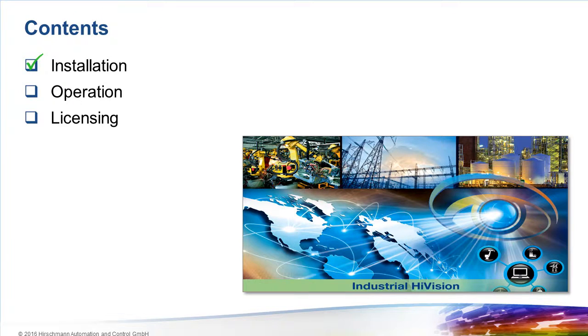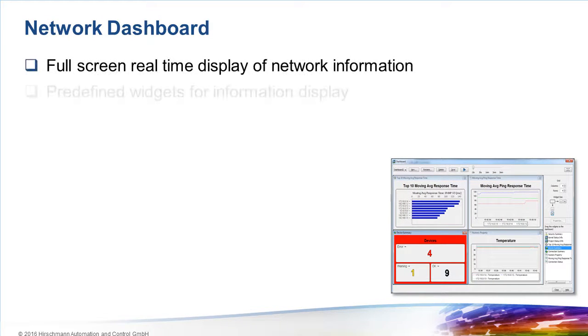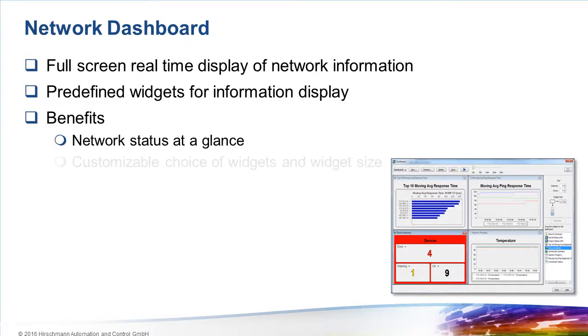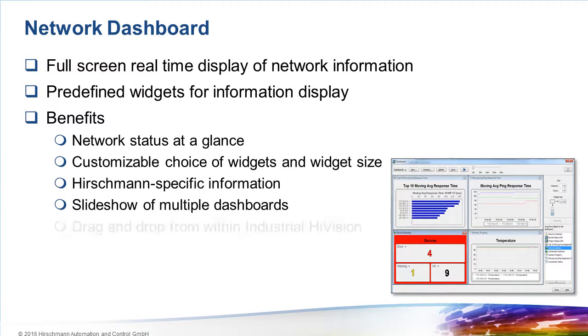That brings us to the end of the installation part. Now let's take a look at operation. There are only two major new functions, but both these functions greatly facilitate the day-to-day management of large networks. The first new function is the network dashboard. In large networks, it's a challenge for the network administrator to know the status of all components. Although Industrial HiVision can provide that information in great detail, what is required is a concise summary. The purpose of the network dashboard is to provide, at a glance, the status of the network.